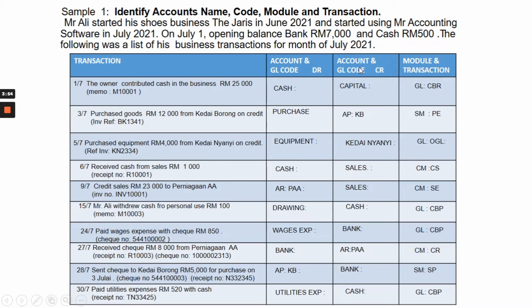We will focus on the account name and general ledger code. Most of the accounts are provided in the account maintenance, but there are a few accounts that are not provided, so we have to amend and create a few accounts. For example: capital, equipment, drawing, wages expenses, and utilities — that is about seven accounts in total that we have to amend and create in the account maintenance.